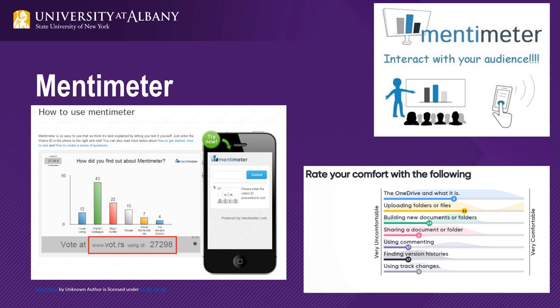Mentimeter is an online presentation builder that helps you to interact with your audience. It allows you to build beautiful presentations, collect polls, data, and opinions from participants in real time using a web-based tool. It also allows you to analyze data and act. There is a free and paid version of this software. While the paid version is better, the free version has plenty of functionality. Features include content slides.